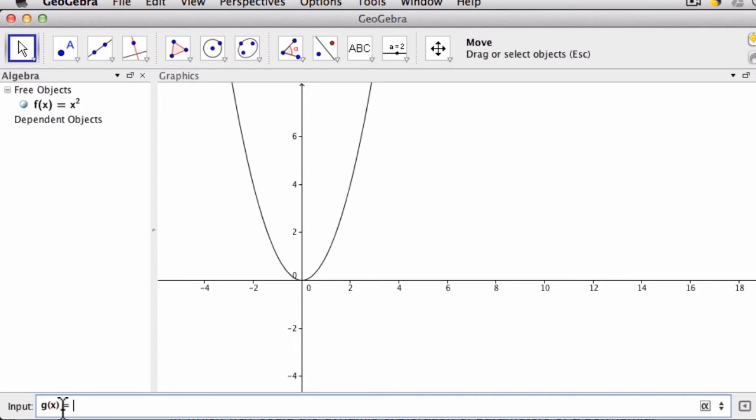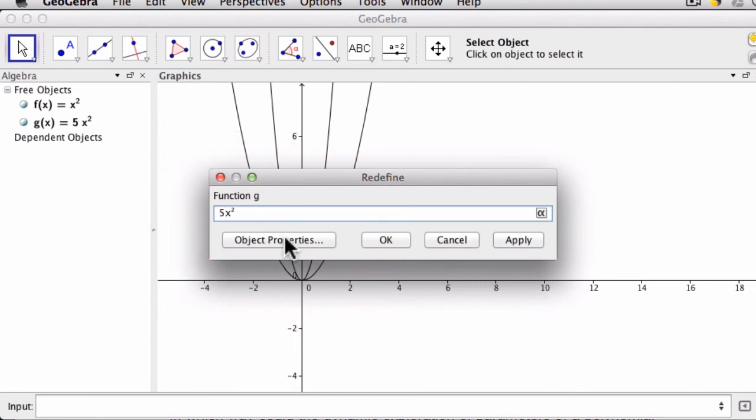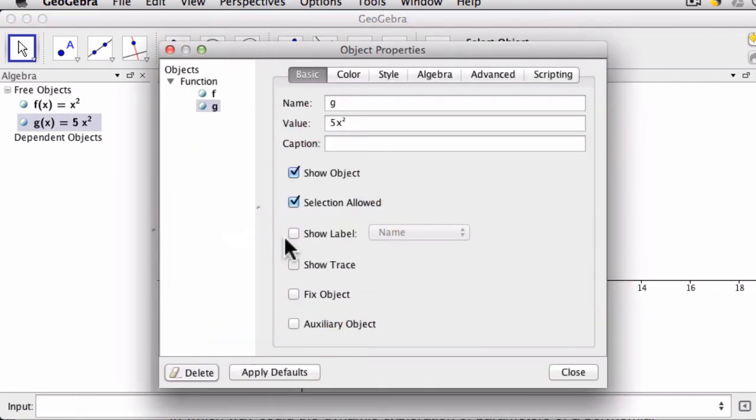And that could equal 5x^2. And students can see this, and you can have them change the color. They could double click the graph and go to object properties.